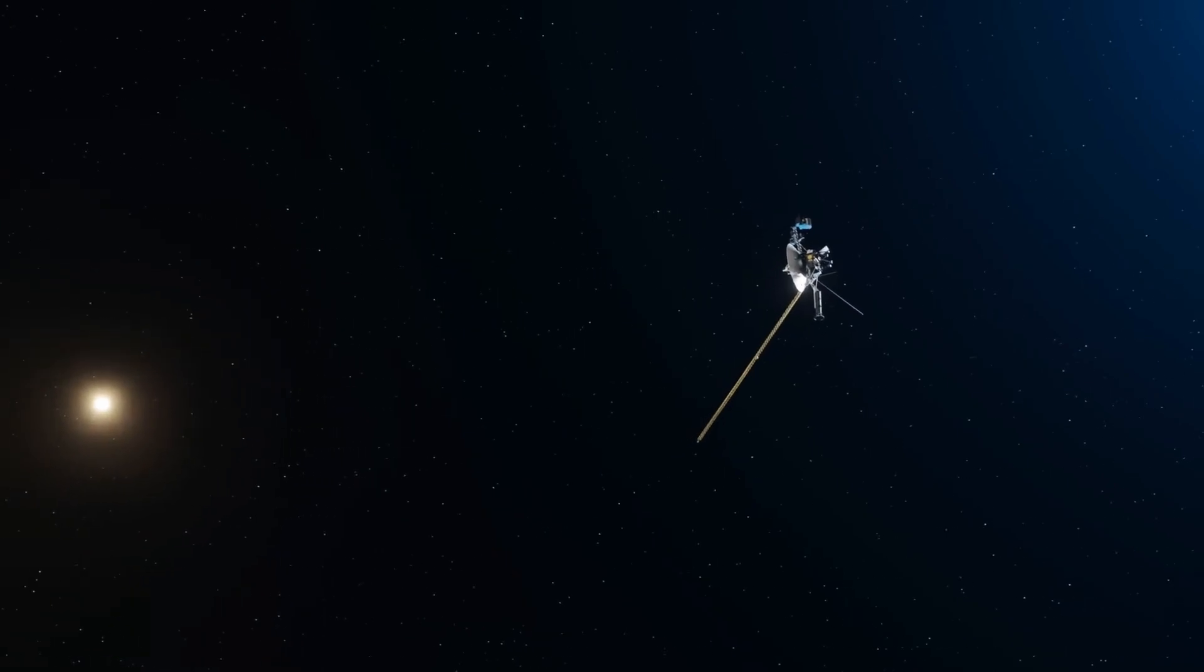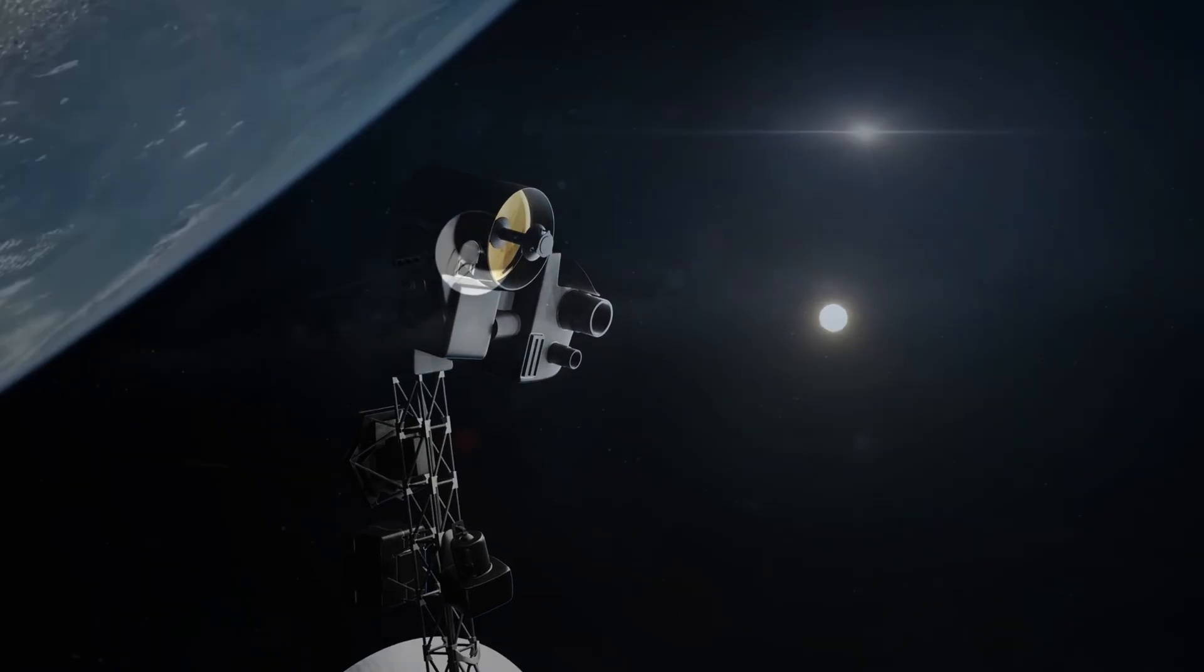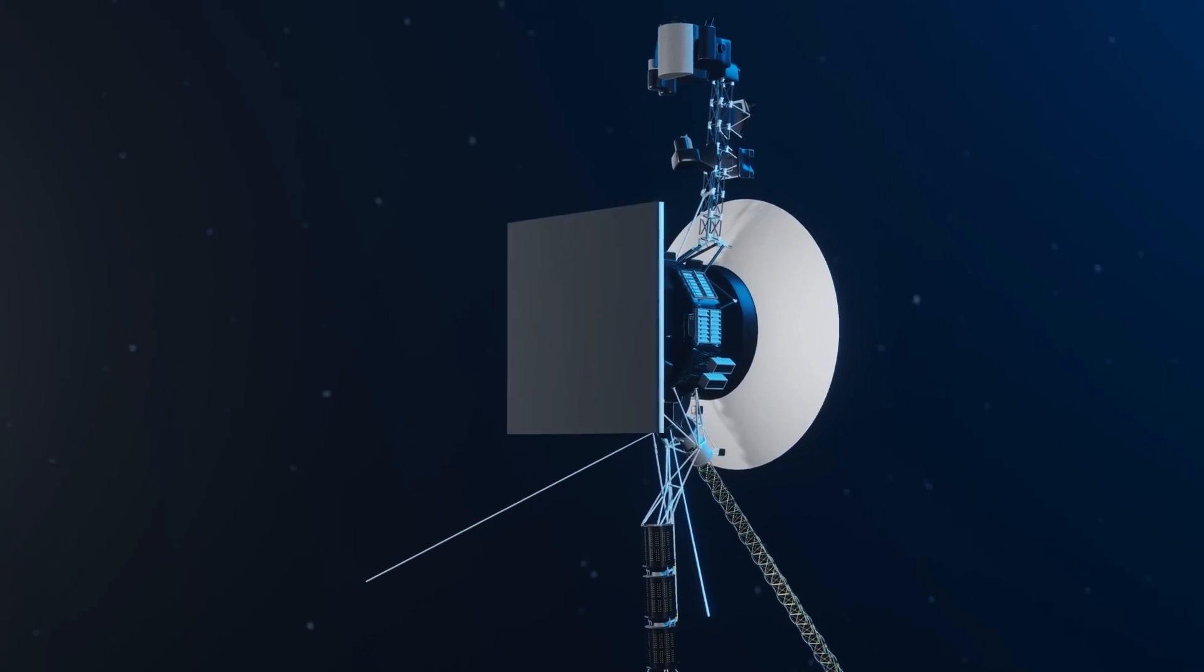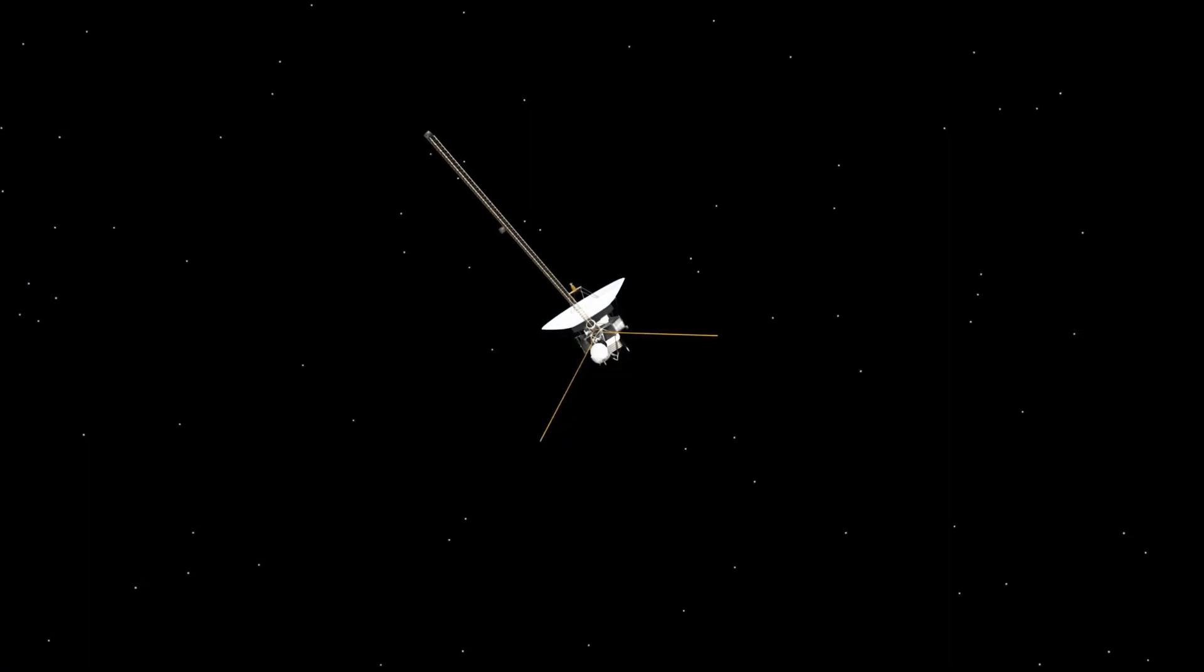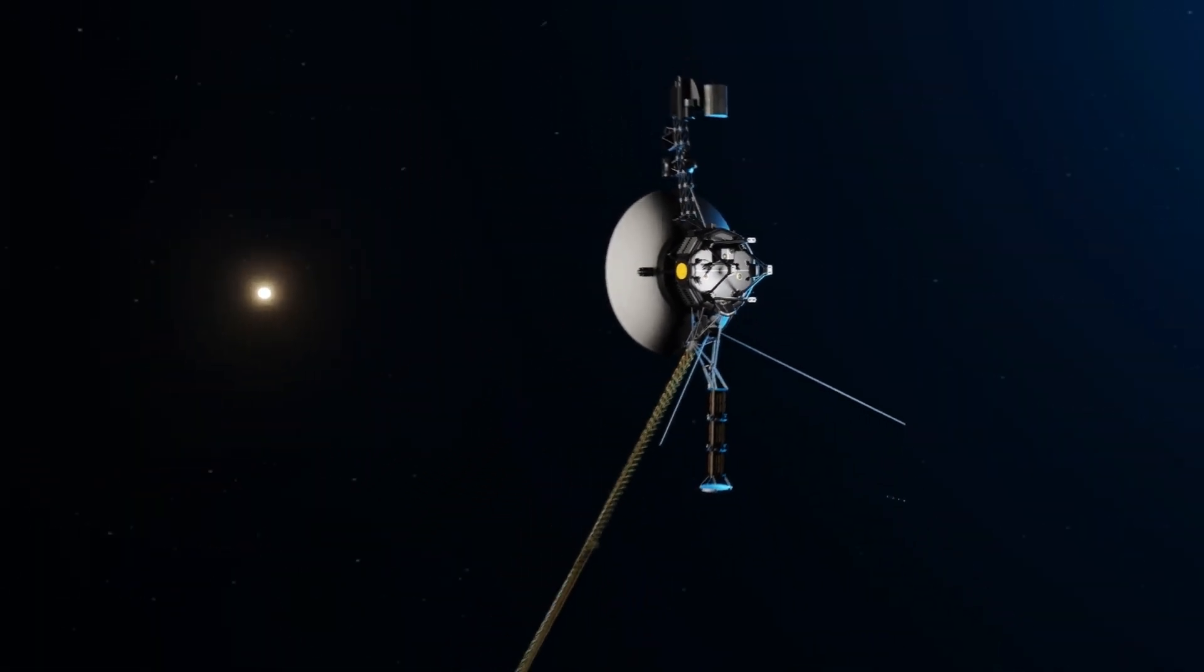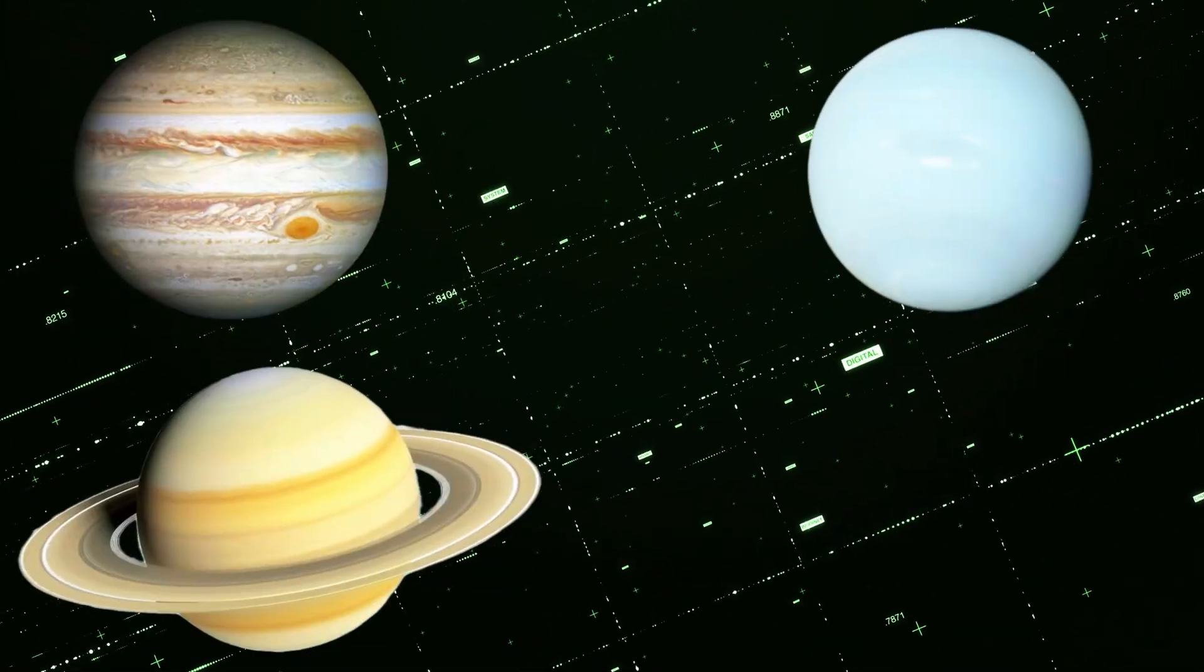Voyager 1 and Voyager 2 travel at different speeds and along different paths. Voyager 1 moves faster at approximately 61,500.7 kilometers per hour, while Voyager 2 travels at 56,327.4 kilometers per hour. Voyager 1 has captured breathtaking images of Venus, Jupiter, Neptune, Saturn, and Uranus.